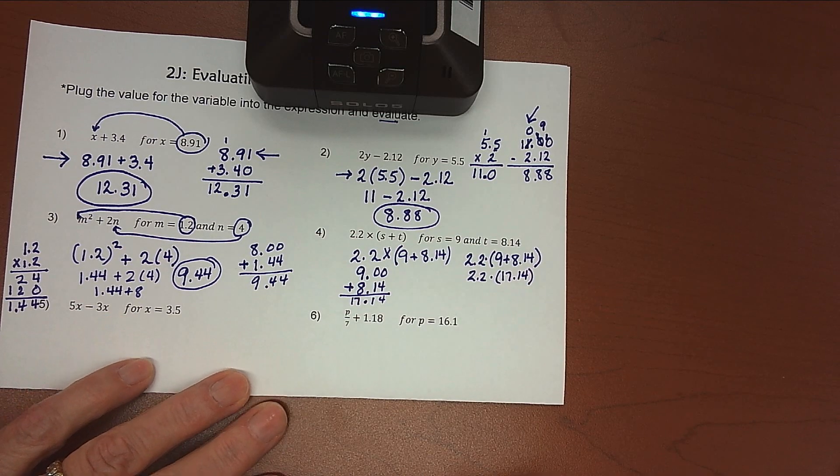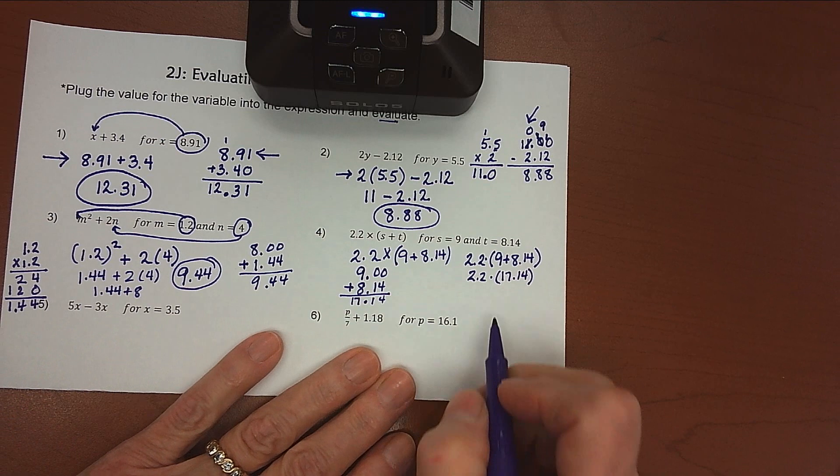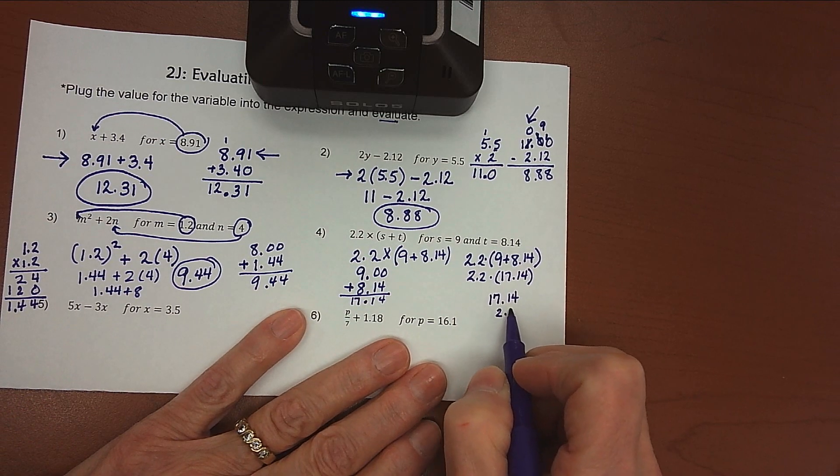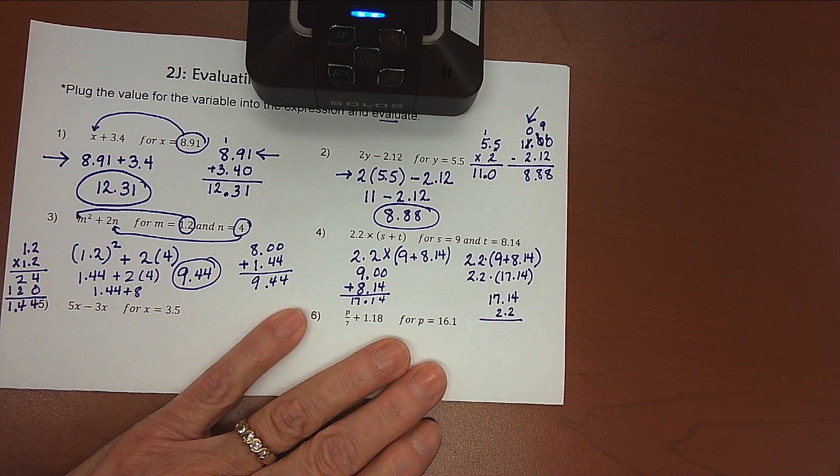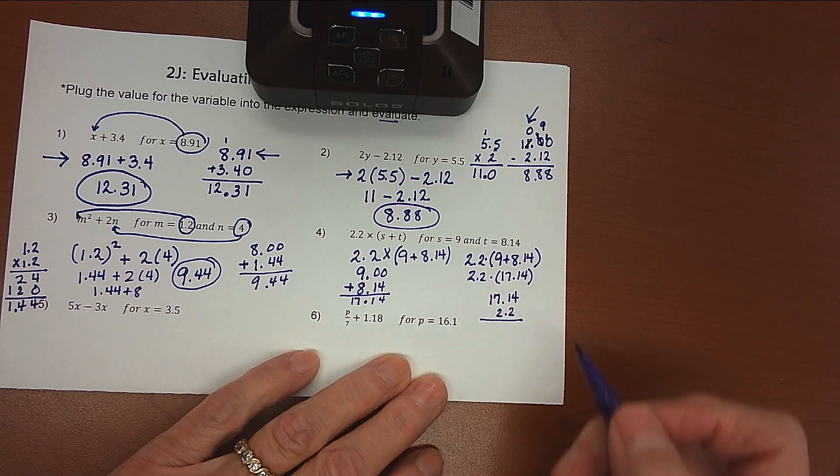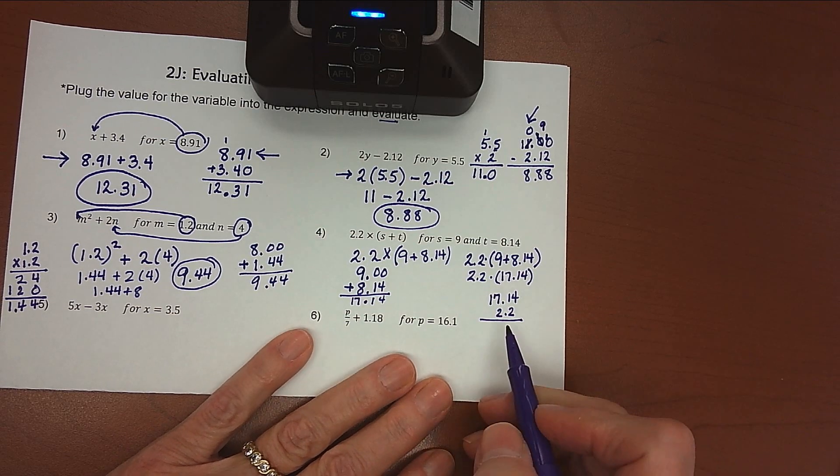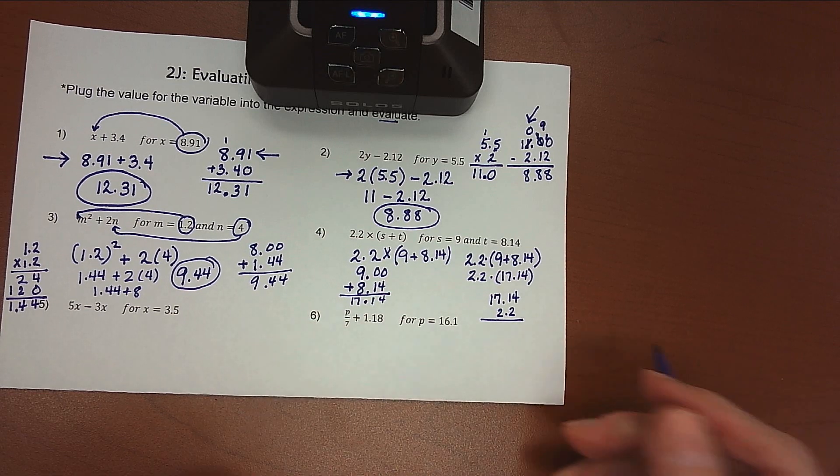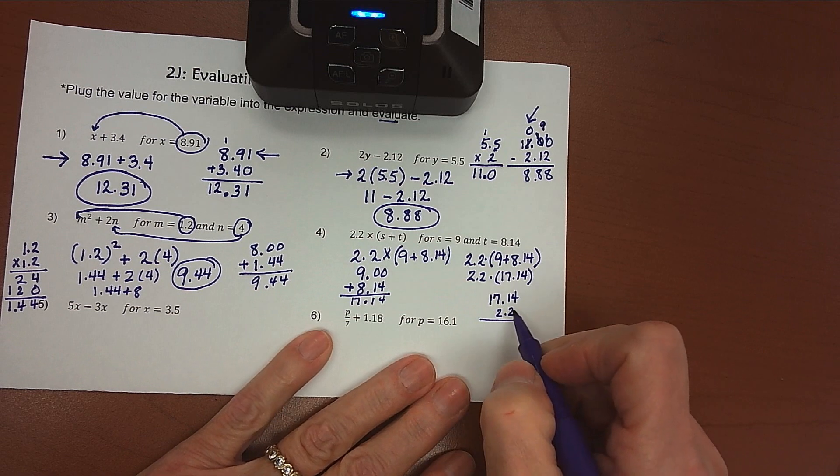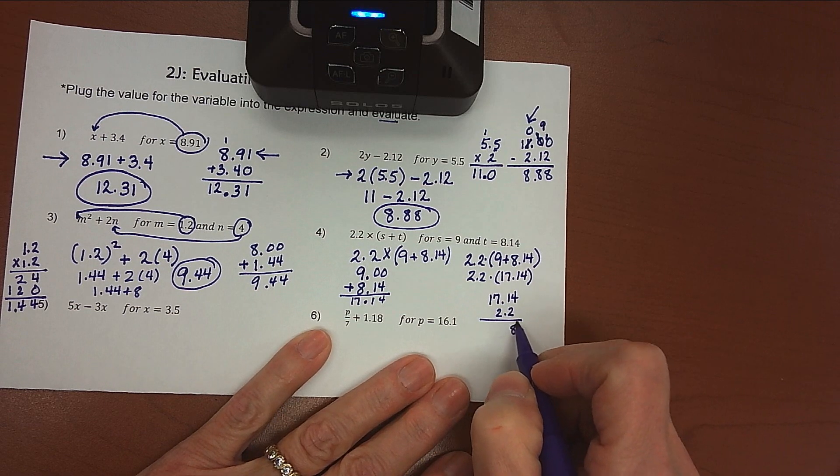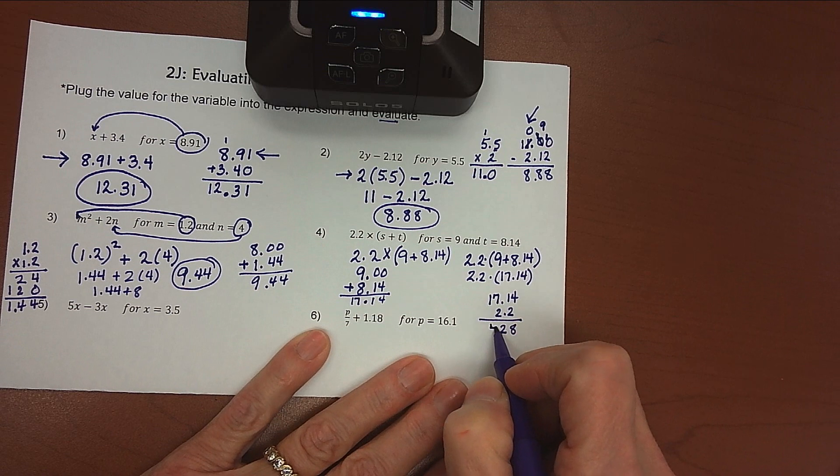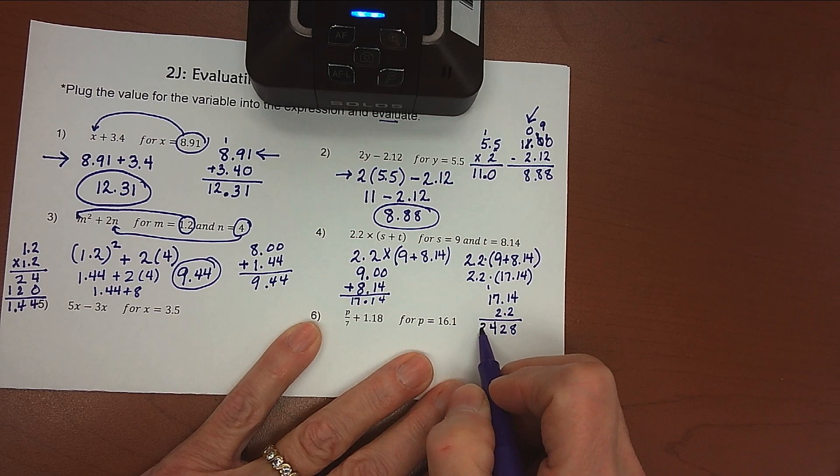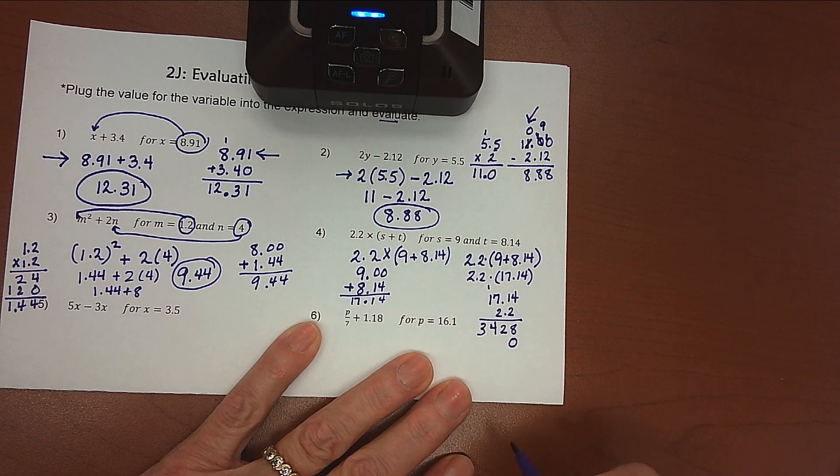Now we're going to take that 17.14 and multiply it by 2.2. So 17.14 times 2.2. Again, we want the longer number on the top. It makes our multiplication a shorter problem. I'm ignoring the fact that there's decimals in this problem until the very end. I didn't line up the decimals on purpose. Just the way I wrote it happened to kind of look like they're lined up. So 2 times 4 is 8. 2 times 1 is 2. 2 times 7 is 14. Put my 4 down. Carry my 1. 2 times 1 is 2, plus 1 is 3. Moving over a digit, so add a 0 here as a placeholder.